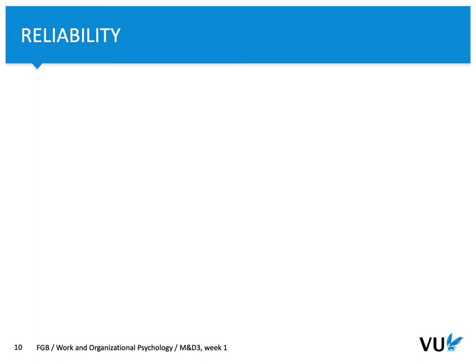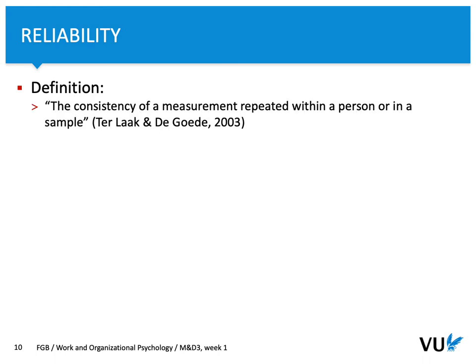When we assess reliability, we focus on measurement. Reliability is related to the use of a test — it's not a characteristic of the test itself, but an aspect of measurement. The basic definition: reliability is consistency of a measurement repeated within a person or in a sample. To assess reliability, we have to use a specific instrument with a few items at least, repeatedly within a person — typically way more than two or three items.